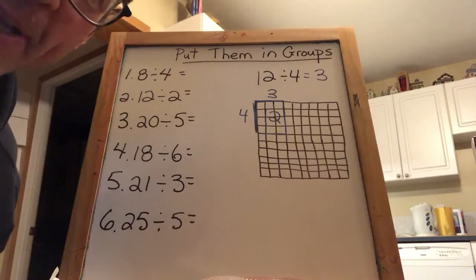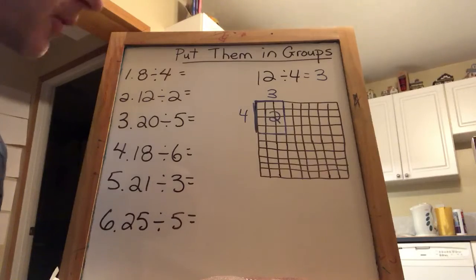Hi guys, when we left off last time we had just done 12 divided by 4 equals 3 on our area model or making our array.